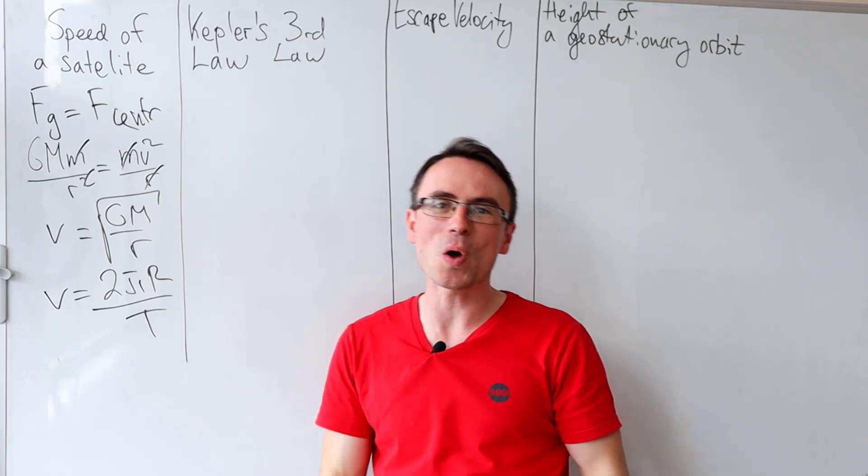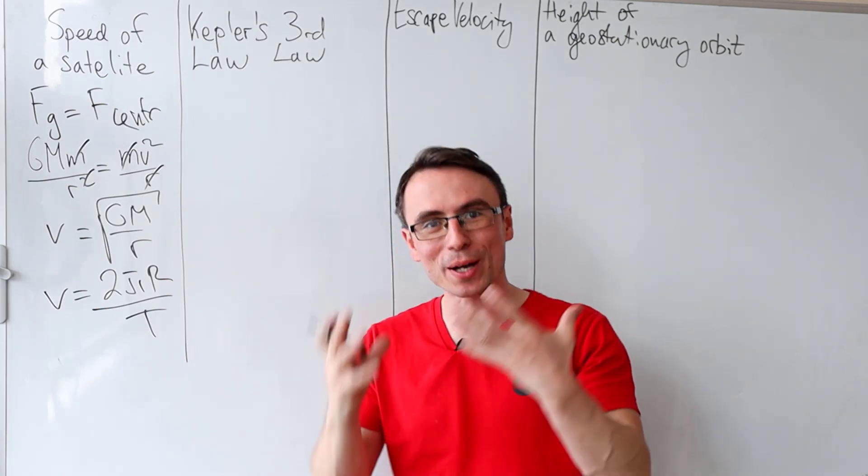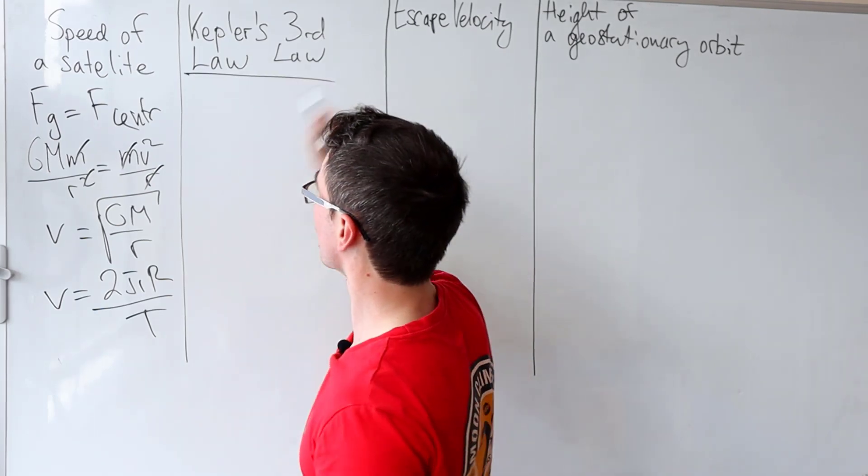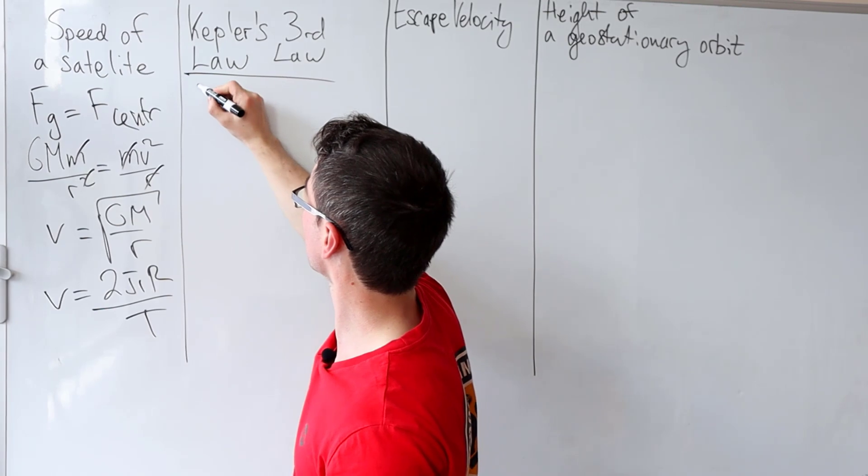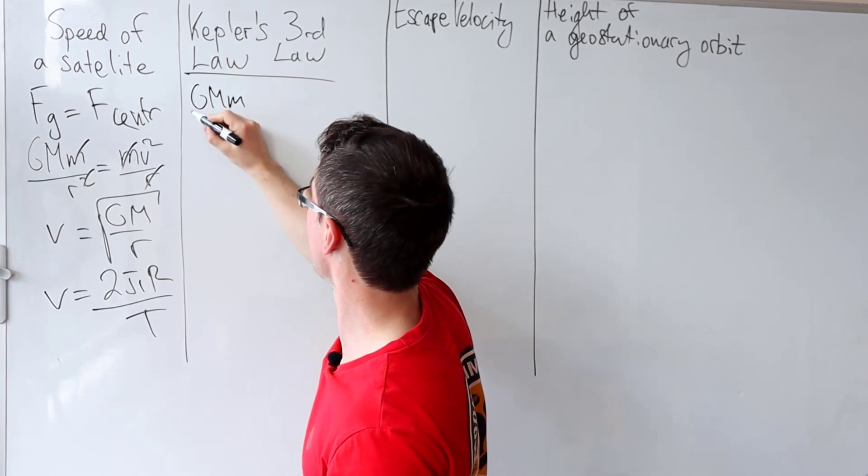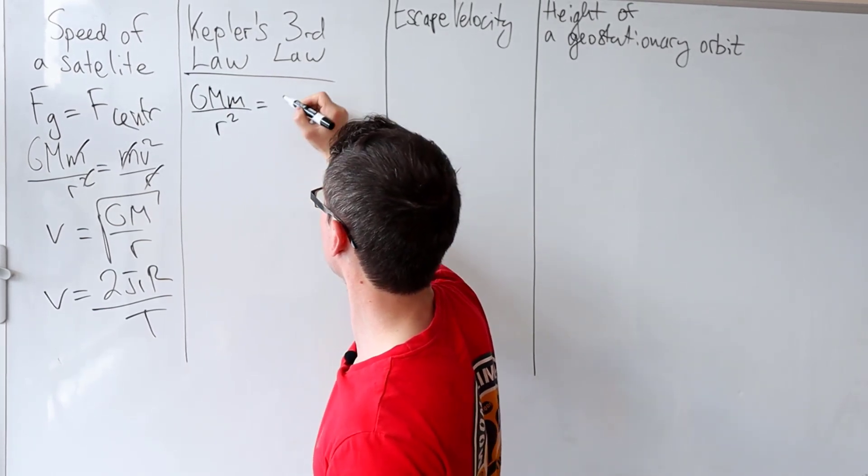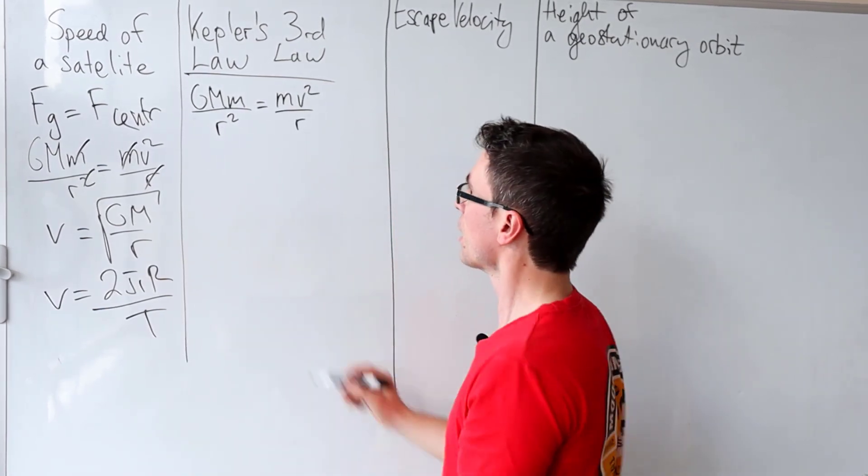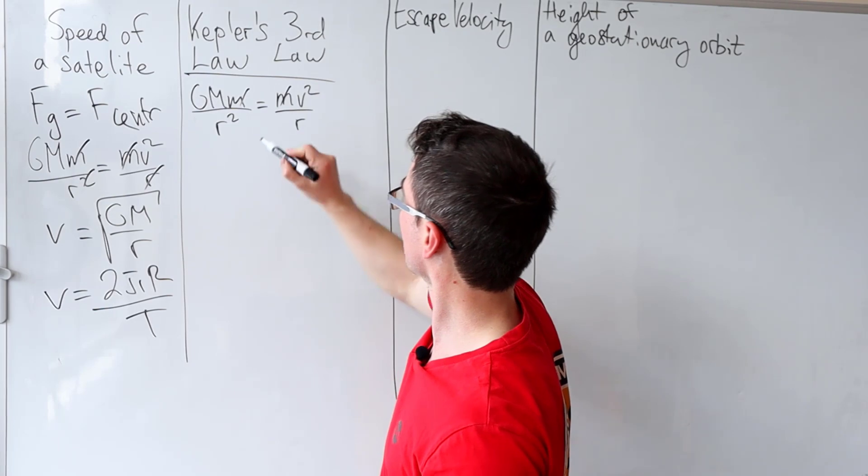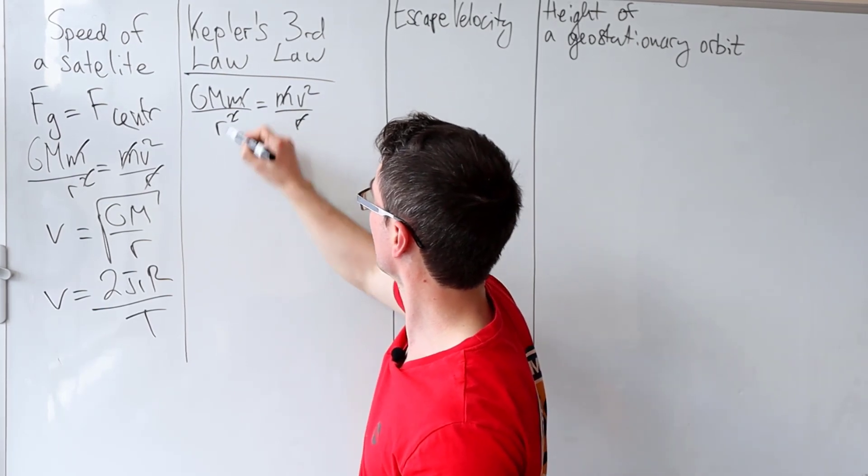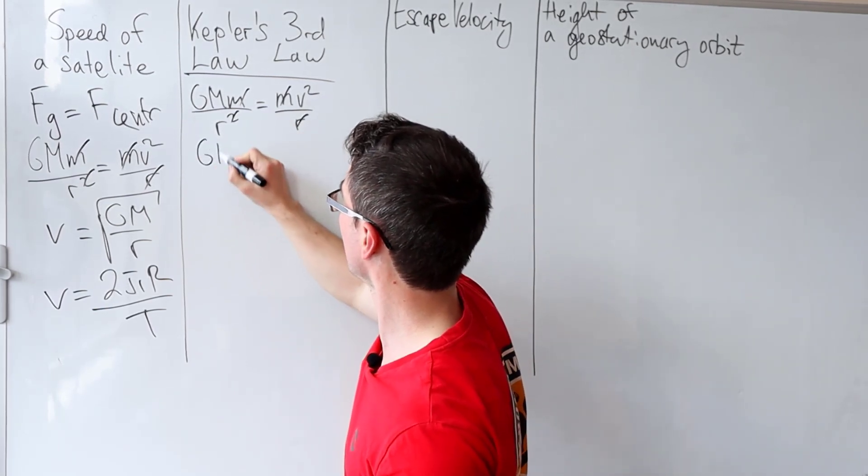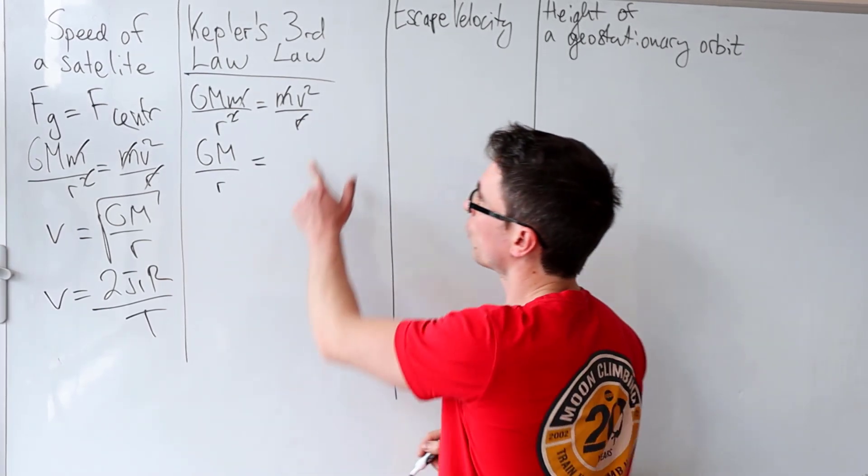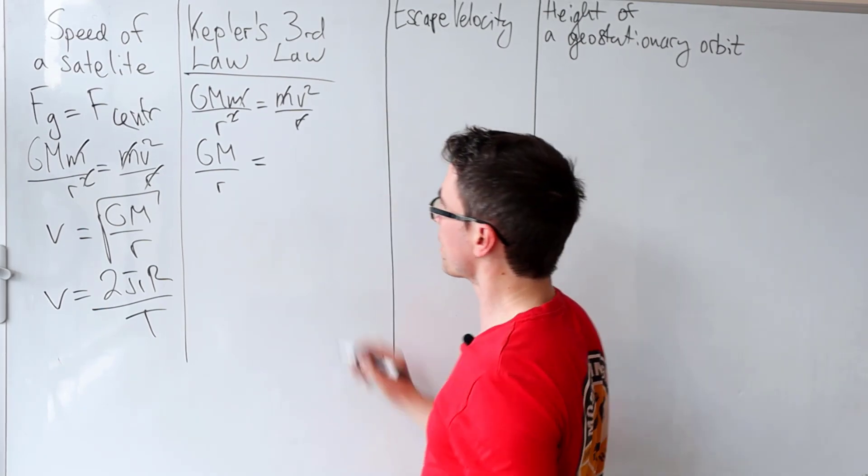Kepler's third law, its derivation is all about setting the two forces equal one another. So similarly to this, I'm going to say that GMm/r² is equal to mv²/r. Let's do the standard amount of cancellations and what we're left with is that GM/r is equal to v².